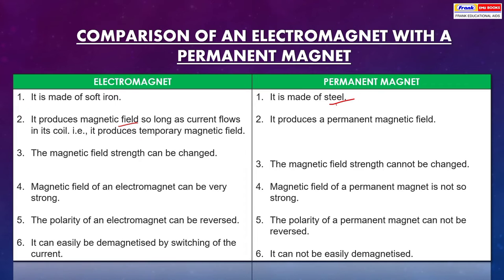The polarity of an electromagnet can be reversed, but the polarity of a permanent magnet can never be reversed. Electromagnet can easily be demagnetized by switching off the current, but permanent magnet cannot be easily demagnetized.